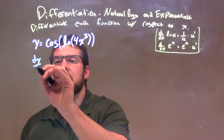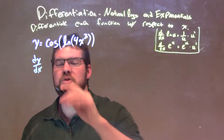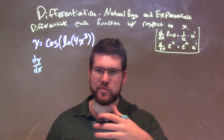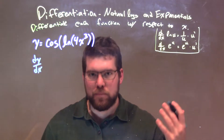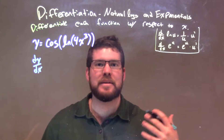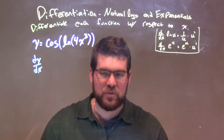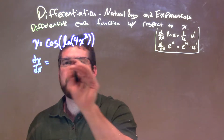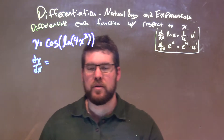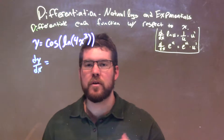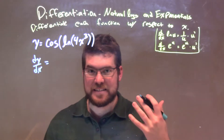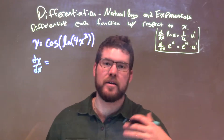We have dy/dx, and we're applying the chain rule with natural log rules, trig rules, and power of log rules. First things first, we start on the outside. The derivative of cosine of x is negative sine of x.